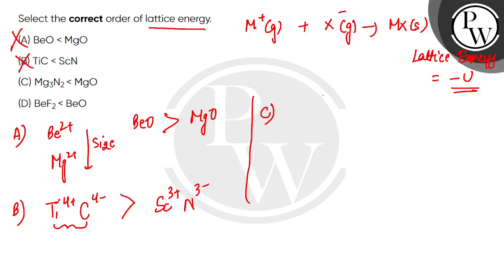In option C, we have magnesium nitride and magnesium oxide. Magnesium is common, so we compare nitrogen and oxygen. Nitrogen is N^3- and oxygen is O^2-. Nitrogen has more charge, which means the charge density will be more.